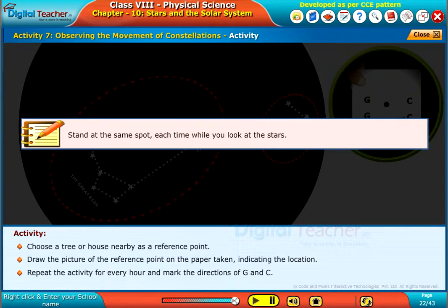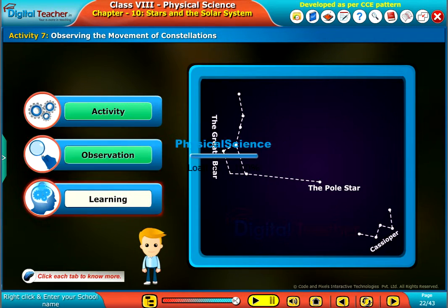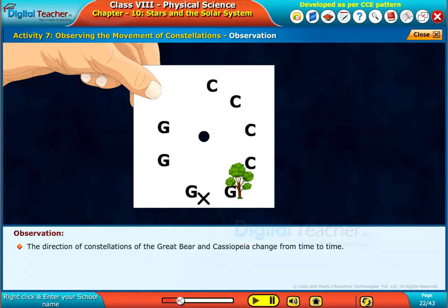Note: stand at the same spot each time while you look at the stars. The direction of constellations of the Great Bear and Cassiopeia change from time to time.